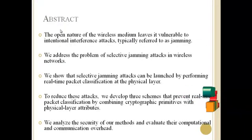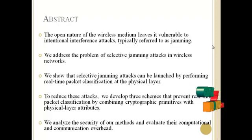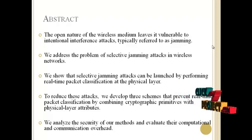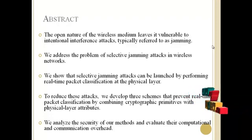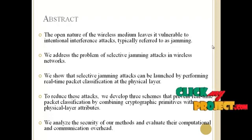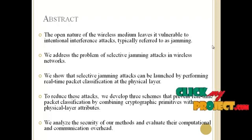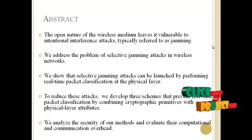Let us see the abstract of our project. The open nature of the wireless medium leaves it vulnerable to intentional interference attacks, typically referred to as jamming. We address the problem of selective jamming attacks in wireless sensor networks. We show that selective jamming attacks can be launched by performing real-time packet classification at the physical layer. To reduce these attacks, we develop three schemes that prevent real-time packet classification by combining cryptographic primitives with physical layer attributes. We analyze the security of our methods and evaluate the computational and communication overhead.